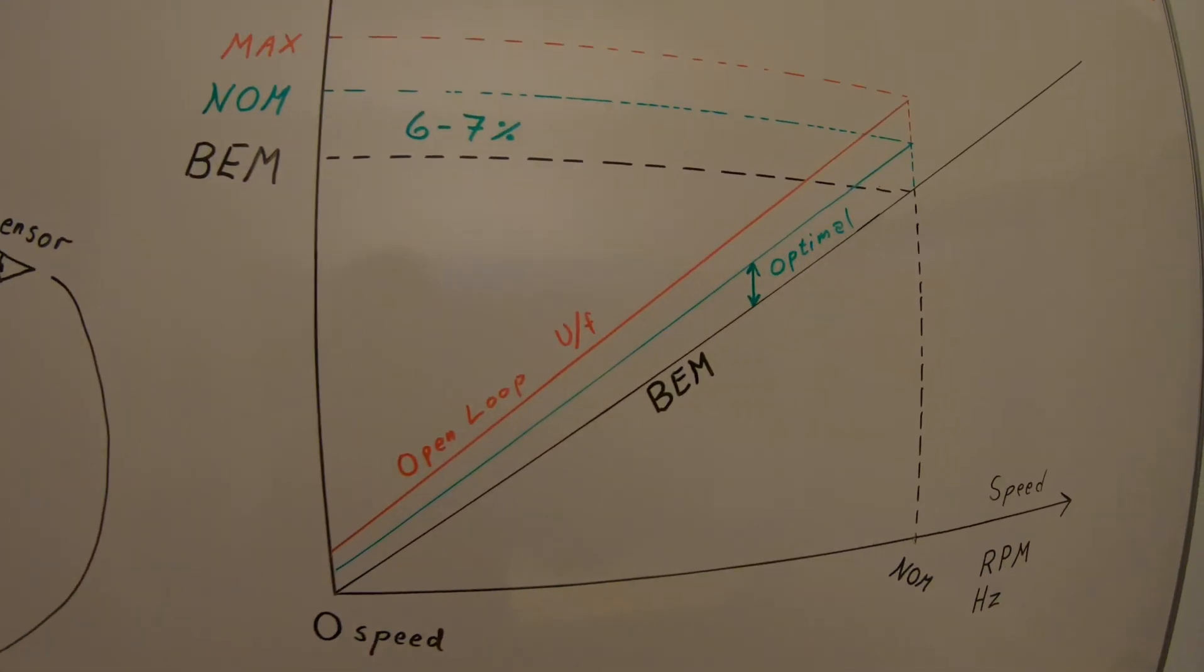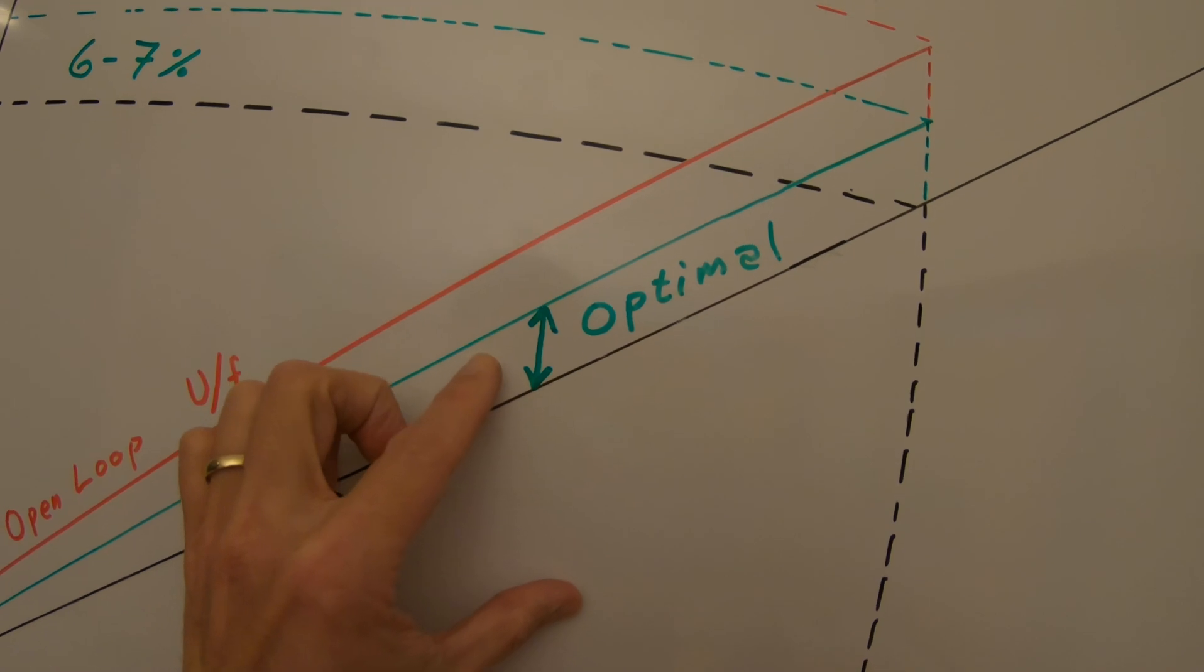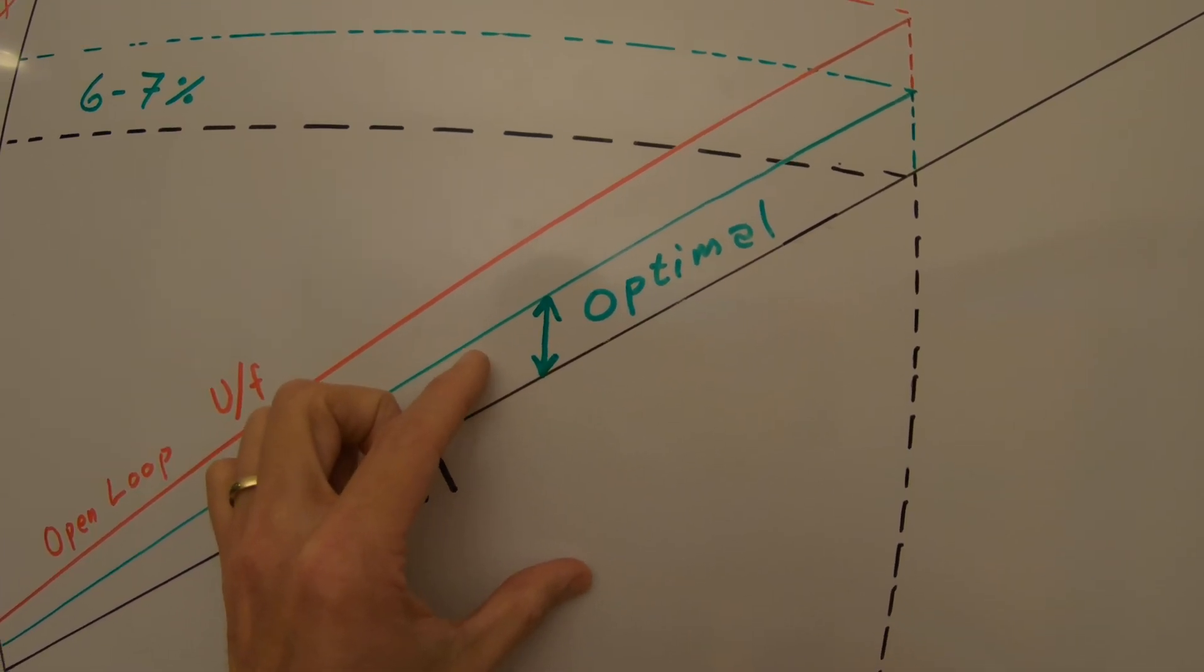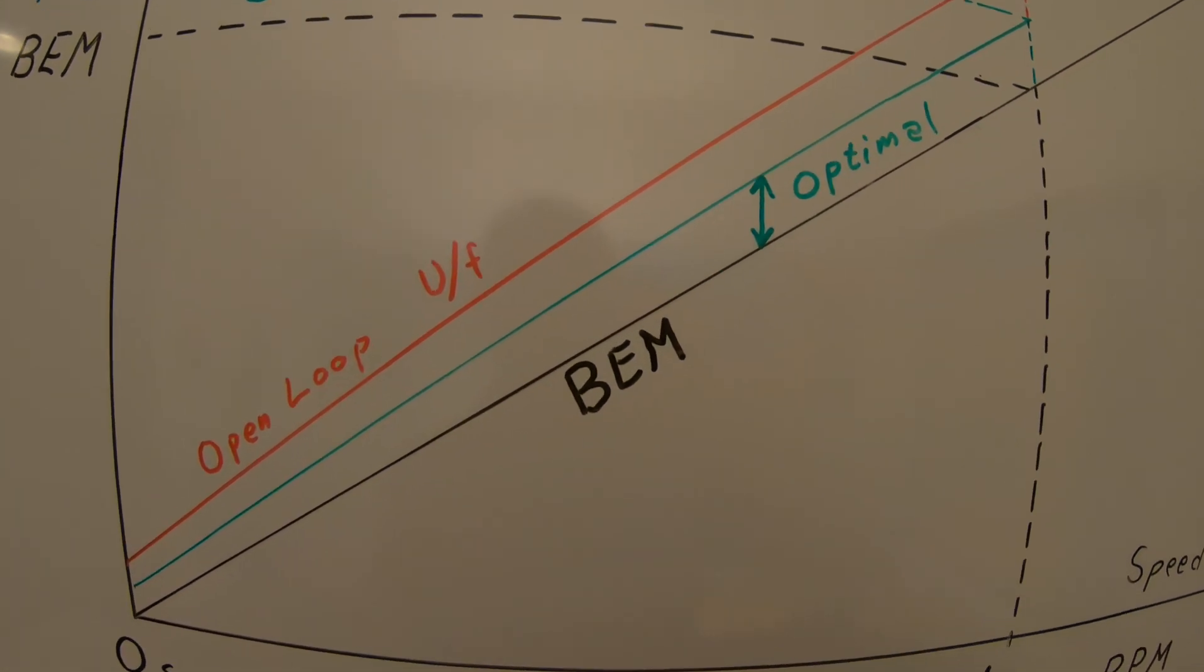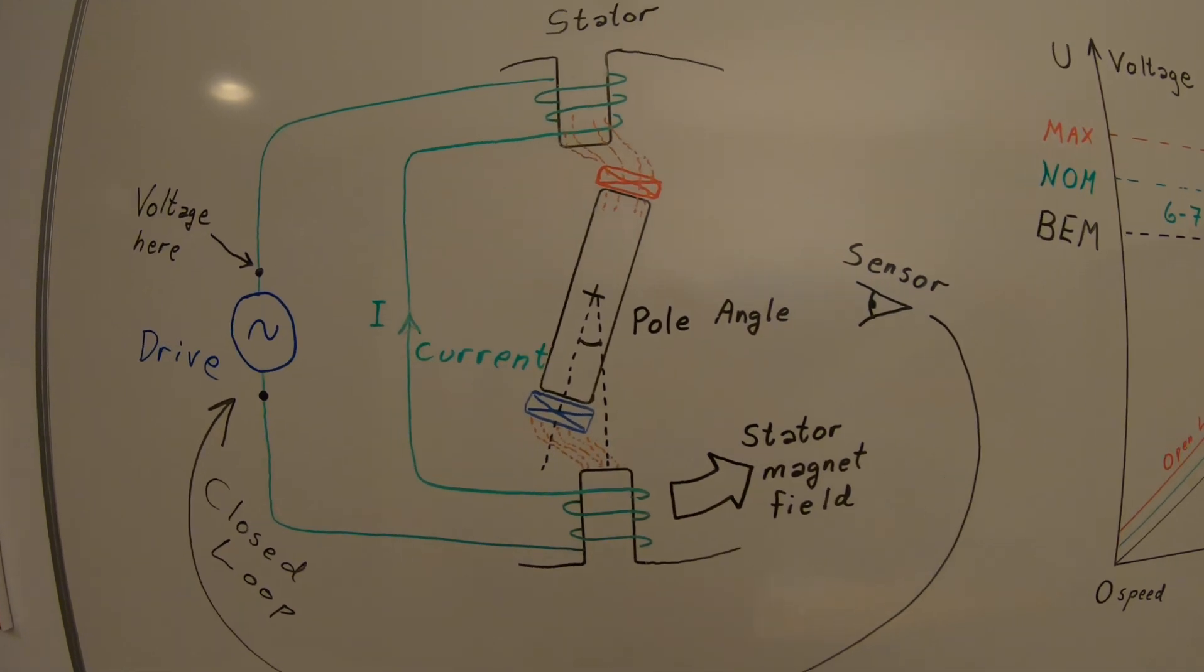Physically what happens is that the frequency converter will lift and lower the voltage out of the drive to sit above the back EMF voltage just enough, just optimal for what's needed to drive this process.